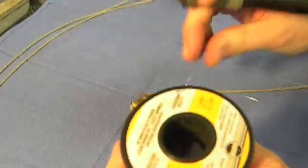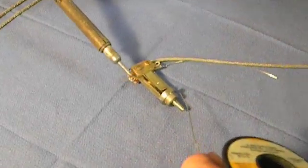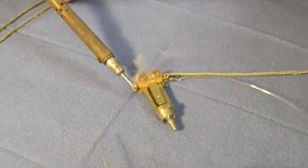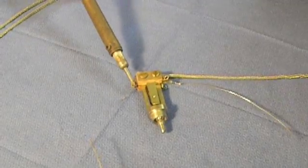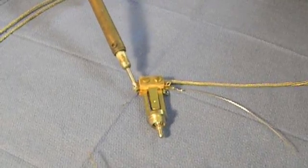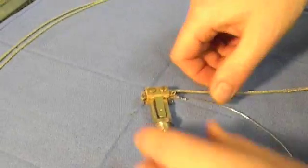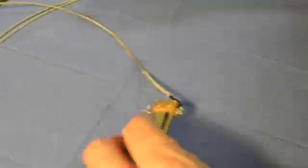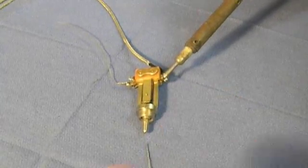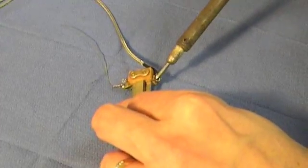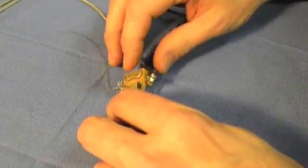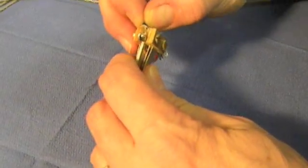And we're just going to solder it to the switch. Heat the joint first, and then apply our solder. And we're going to flip it over and get that other leg.